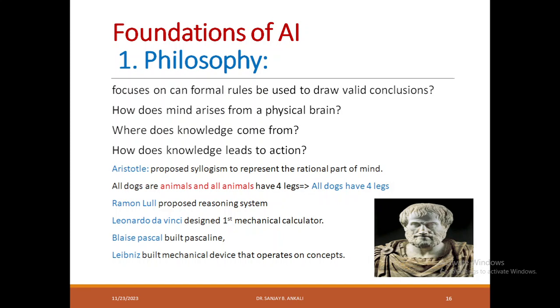Aristotle in 345 BC proposed a syllogism to represent the rational part of the mind. It deals with premises and common terms. For example, the first premise is all dogs are animals and the second premise is all animals have four legs. The common term is animals. When you conclude, the common term disappears from both premises to get the conclusion: all dogs have four legs.